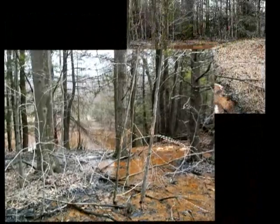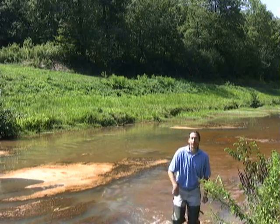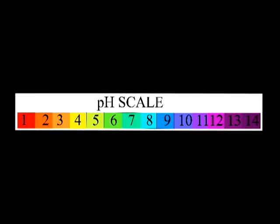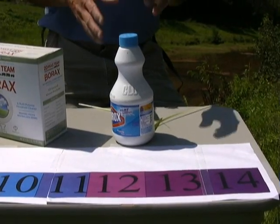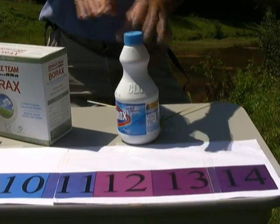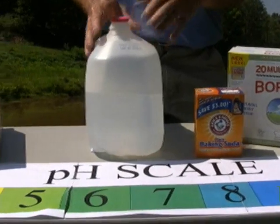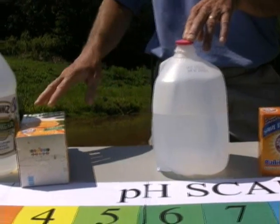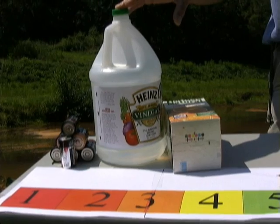If the water becomes acidic, it is referred to as acid mine drainage. The amount of acid in a solution can be determined by using a pH scale. This scale ranges from 1 to 14. Anything below 7 on the pH scale is considered acidic; anything above 7 is considered alkaline. To better relate to this scale, let's look at some common household products. At the high end we have bleach, then borax, then baking soda. A pH of 7 is neutral — normally what we want for drinking water and streams. Below 7 is acidic: orange juice, vinegar, and at the very low end, sulfuric acid, normally found in batteries.